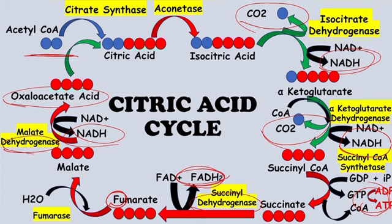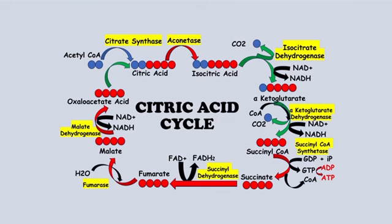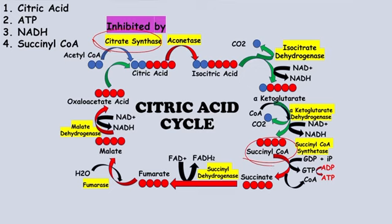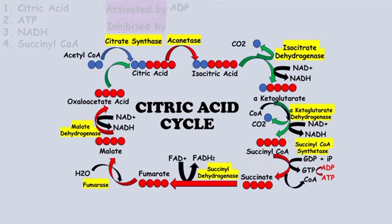Regarding enzyme regulation, the first enzyme citrate synthase is inhibited by its product citric acid. Since the purpose of the cycle is to generate ATP, high levels of ATP also inhibit citrate synthase. NADH inhibits it as well, since NADH goes to the electron transport chain to generate ATP. Succinyl CoA also inhibits citrate synthase. Conversely, low levels of ADP activate the process.